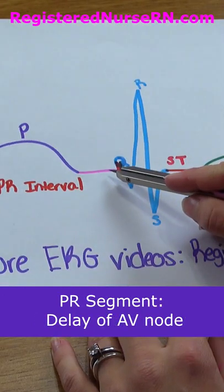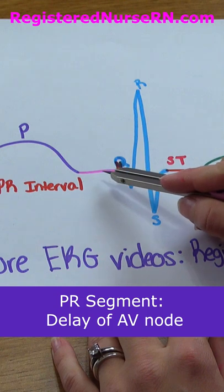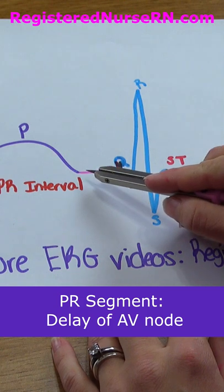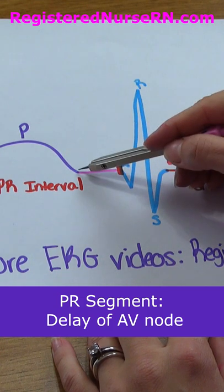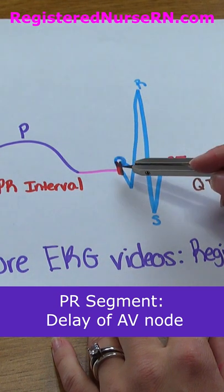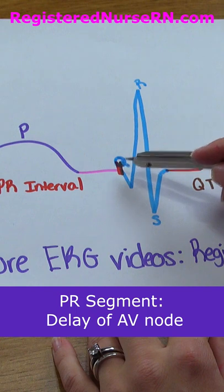Then we have a flat line called the PR segment, and this is the delay created by the AV node. It runs from the end of the P wave to the beginning of the QRS complex.